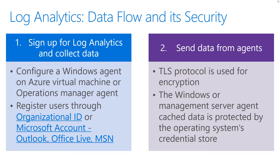Log Analytics uses a secret store to generate and maintain keys. Private keys are rotated every 90 days and are stored in Azure, managed by Azure operations who follow strict regulatory and compliance practices. The Windows or management server agent cache data is protected by the operating system's credential store. If the servers cannot process the data after two hours, the agents will queue the data. If the queue becomes full, the agent starts dropping data types, starting with performance data. The agent queue limit is a registry key, so you can modify it if necessary. Collected data is compressed and sent to the service, bypassing the Operations Manager management group databases so it does not add any load to them.